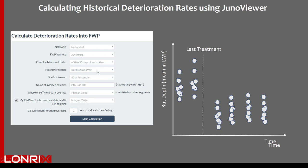Next, we specify which data parameter in our database JunoViewer should use, which is essentially the value on our y-axis. We also specify the percentile that must be used in the calculation, and that is what the deterioration rate will then be calculated on.